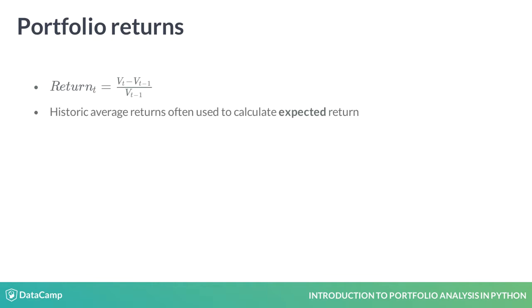Historic returns are also used to calculate a portfolio's expected return for the future. Always take into consideration the probability that an asset will achieve its historical return, given the current investing environment. Some assets, like bonds, are more likely to match their historical returns, while others, like stocks, may vary more widely from year to year.